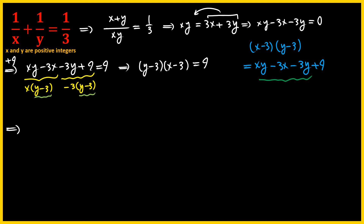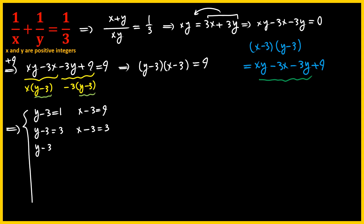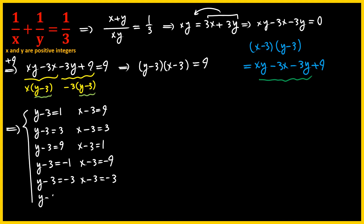This gives us multiple scenarios: either (y minus 3) = 1 and (x minus 3) = 9, since 1 times 9 equals 9; or (y minus 3) = 3 and (x minus 3) = 3, since 3 times 3 equals 9; or (y minus 3) = 9 and (x minus 3) = 1. We also consider negative factor pairs: (y minus 3) = −1 and (x minus 3) = −9, or both equal −3, or (y minus 3) = −9 and (x minus 3) = −1.